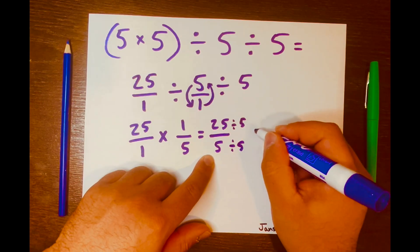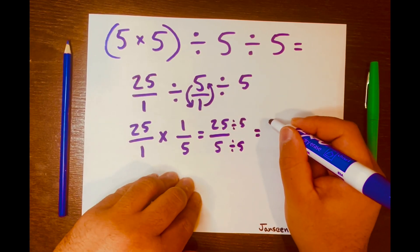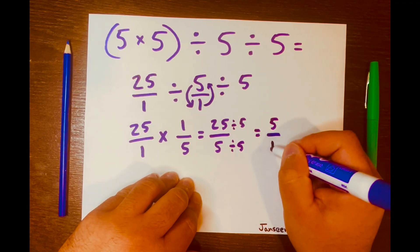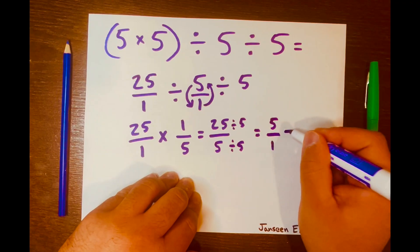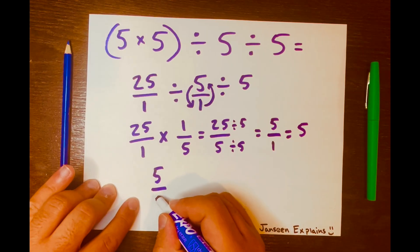5 times 5 is 25, and then 5 divided by 5 is 1. And 5 over 1 is 5. So then I'll write the 5 here and I'll write it in a fraction form.